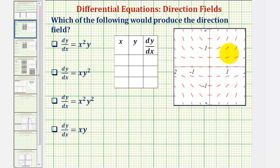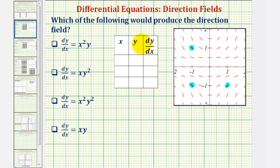Let's use the points (1, -1), (-1, -1), and (-1, 1). We'll find the derivative function values one at a time, and then see which of these derivative function values match the slopes of our segments.